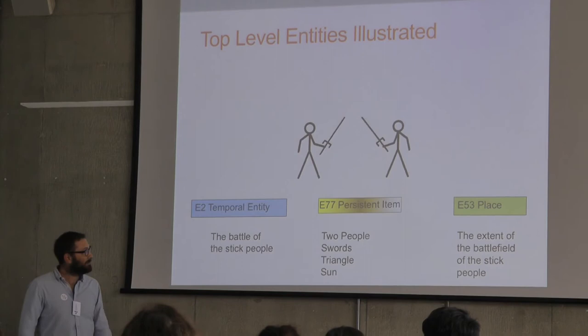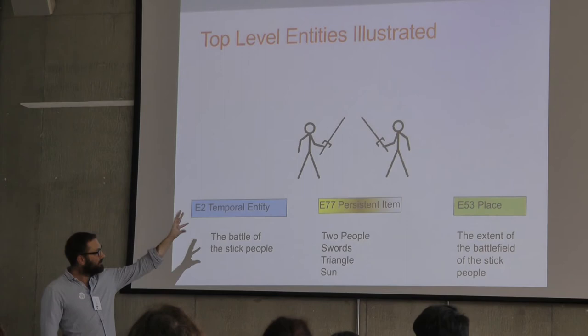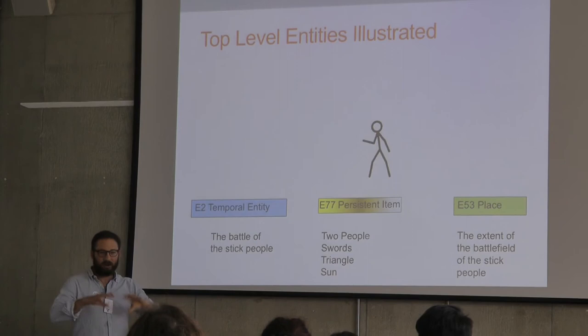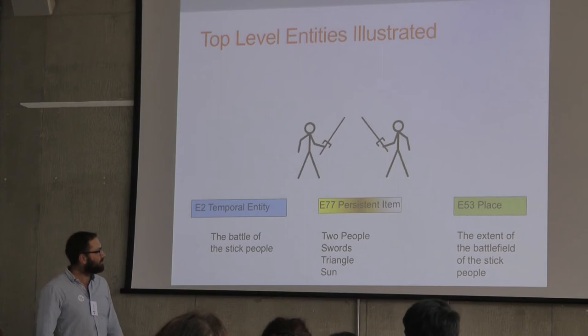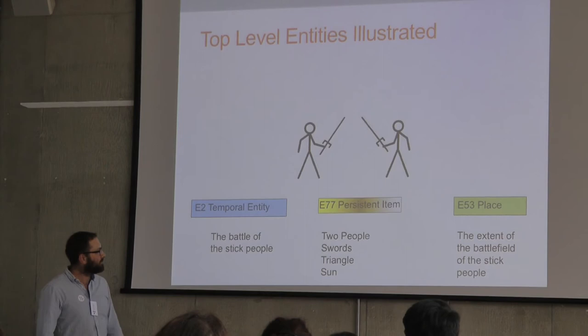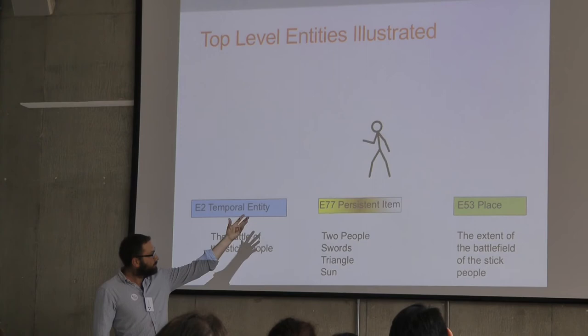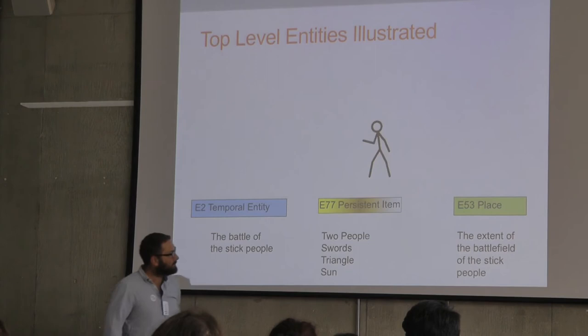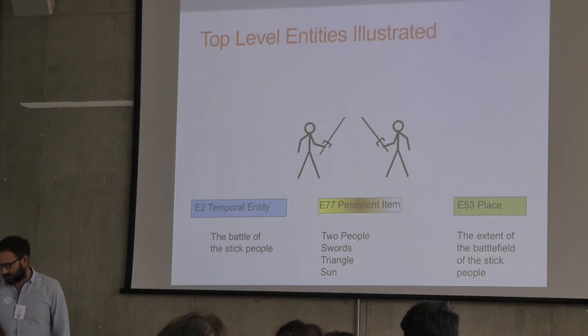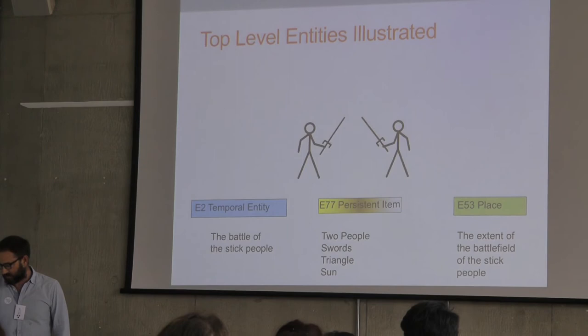Here's the Battle of the Stick People. It attempts to illustrate that we have this event, and if you stop it at any moment, nothing puts it together as being the Battle of the Stick People because nothing is the same between frames. But overall we can recognize there is this battle with a start and an end. We can also recognize there are persistent items — the two people, the swords, the triangle of the sun — which might expand or contract, yet are recognizably the same entities playing through this event. And there must be some geographic extent to the Battle of the Stick People. That's a simple way of conceptualizing the top level of CIDOC CRM.